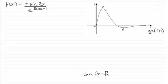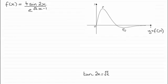Hi there. For this question we were given the curve y equals f of x with the equation f of x equals 4 sine 2x all divided by e to the power of root 2 times x minus 1 — it is root 2 multiplied by x, then minus 1. We had to show that the x coordinates of the maximum point P and the minimum point Q were satisfied by the equation tan 2x equals root 2.